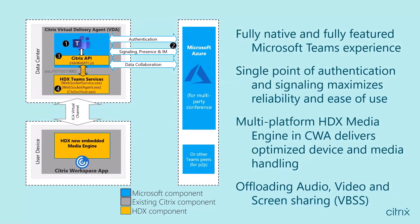A secure web socket connection is opened to the web socket service running on the VDA loopback. The web socket service runs as a local system account on session zero, performing TLS termination and user session mapping. The web socket agent then instantiates a generic virtual channel by calling into the Citrix HDX browser redirection service. The HDX engine spawns a new process called HDX Teams.exe, which is the WebRTC engine used for Teams.